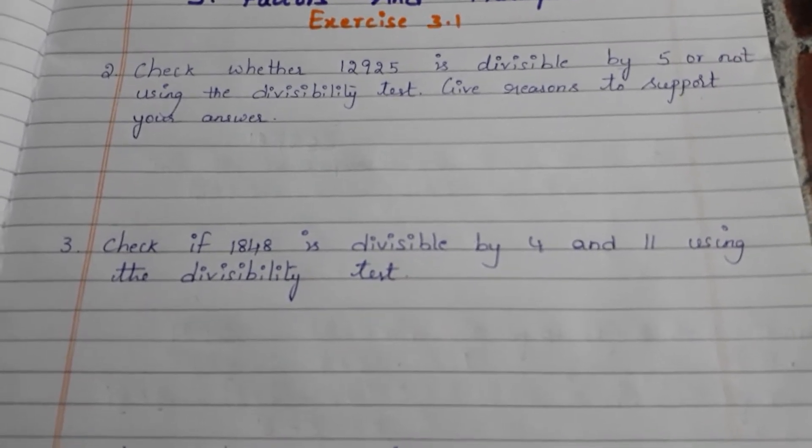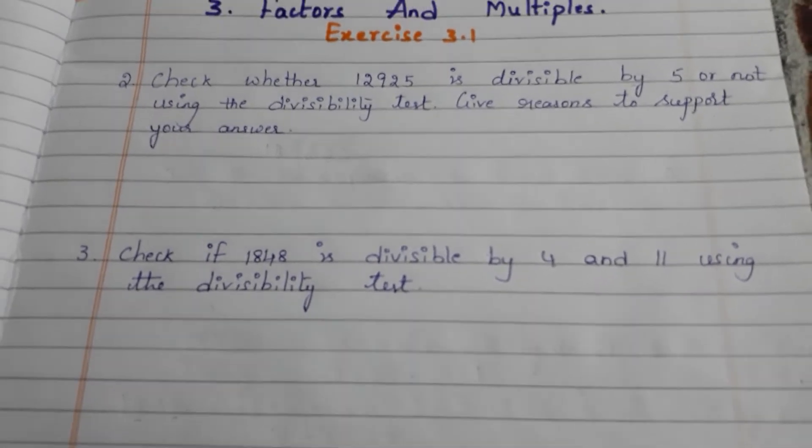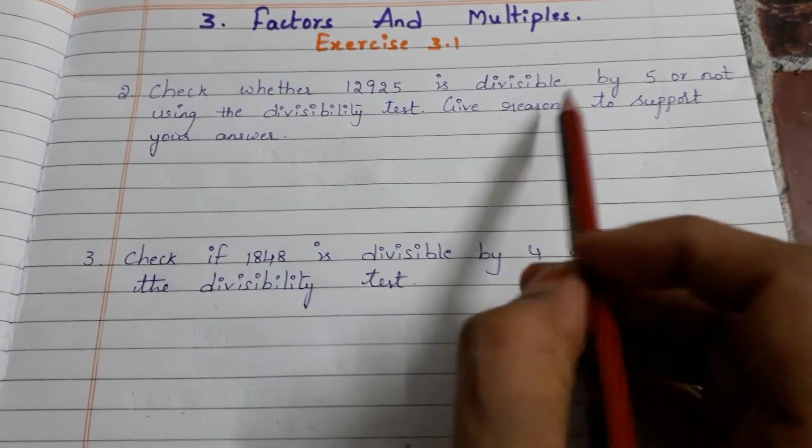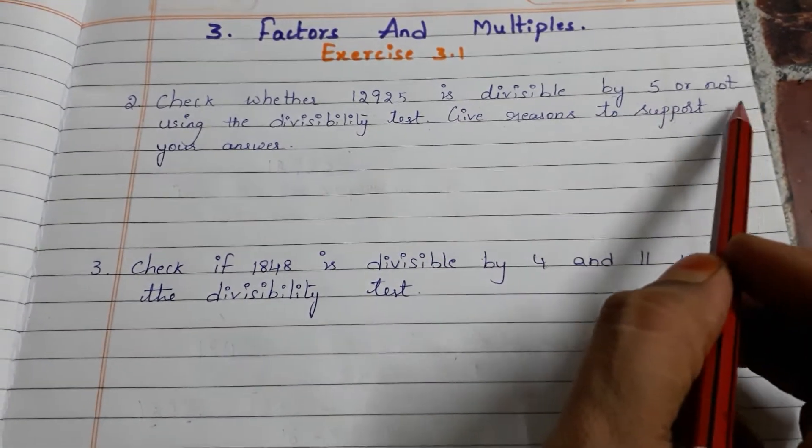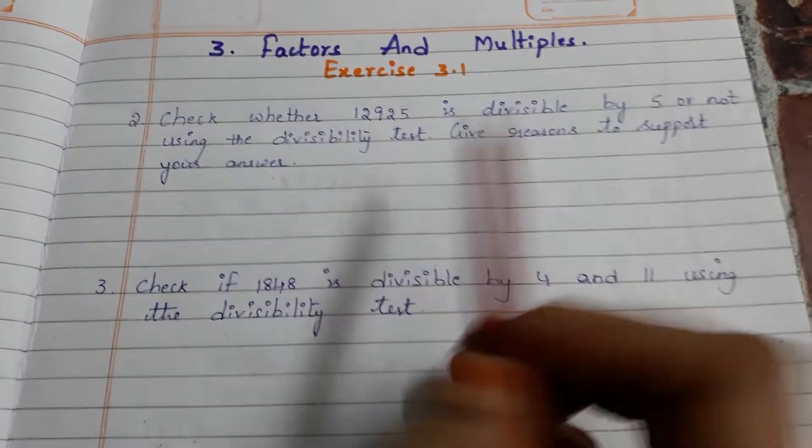Now let us move to the question. The question is: check whether 12925 is divisible by 5 or not using the divisibility test. Give reasons to support your answer.